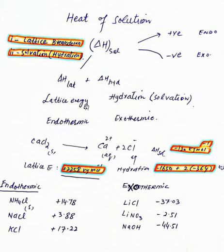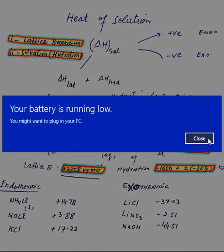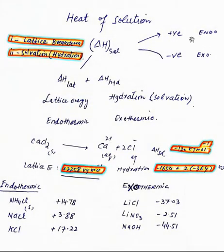Summing these two steps together, it could result either in an endothermic or exothermic process. For example, we have calcium chloride. The lattice energy for calcium chloride is 2258 kilojoules per mole, the energy required to break down the lattice into its calcium and chloride ions.